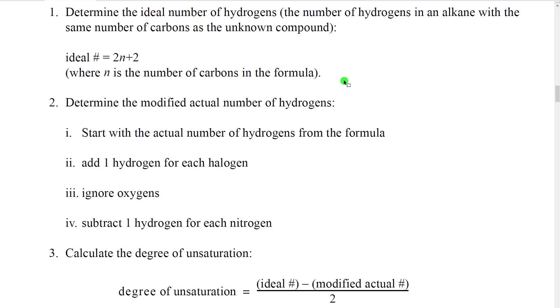We want to compare that to the actual number of hydrogens in the formula of the unknown molecule. Unfortunately, there's a problem. If there are any other elements in there besides carbon and hydrogen, those elements can sort of distort the number of hydrogens in the molecule. So what we're going to do is we're going to need to modify that number of hydrogens to account for the ways that other elements can change the number of hydrogens without actually adding any pi bonds or rings. So what we're going to do is we're going to start with the number of hydrogens given in our given formula.